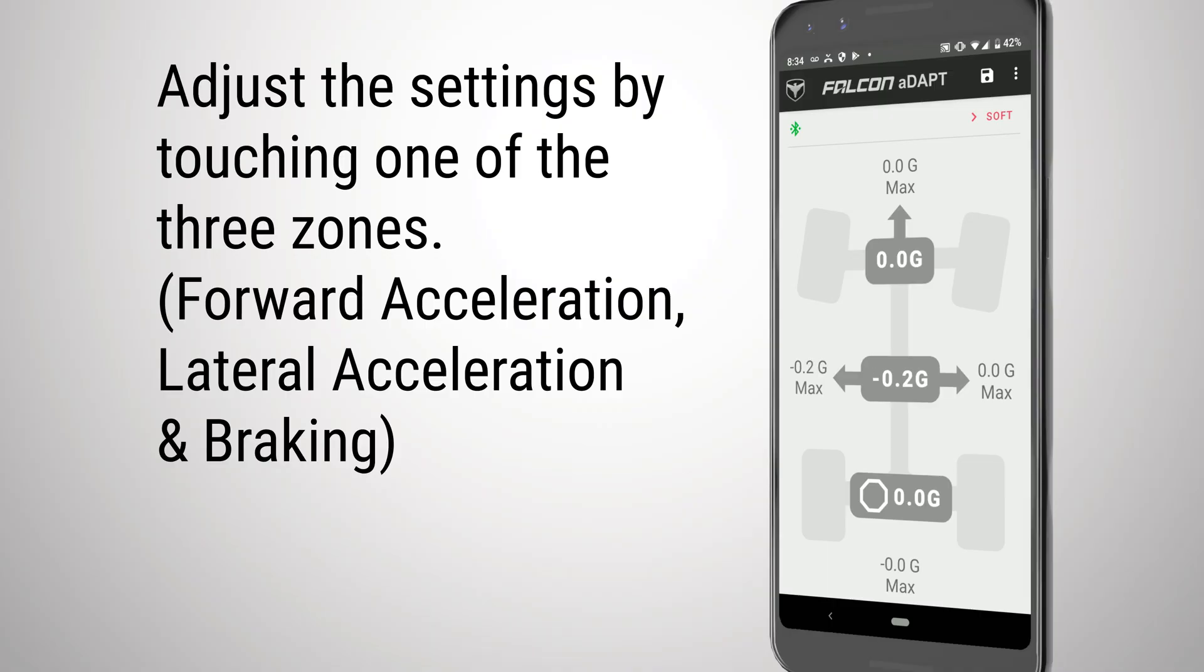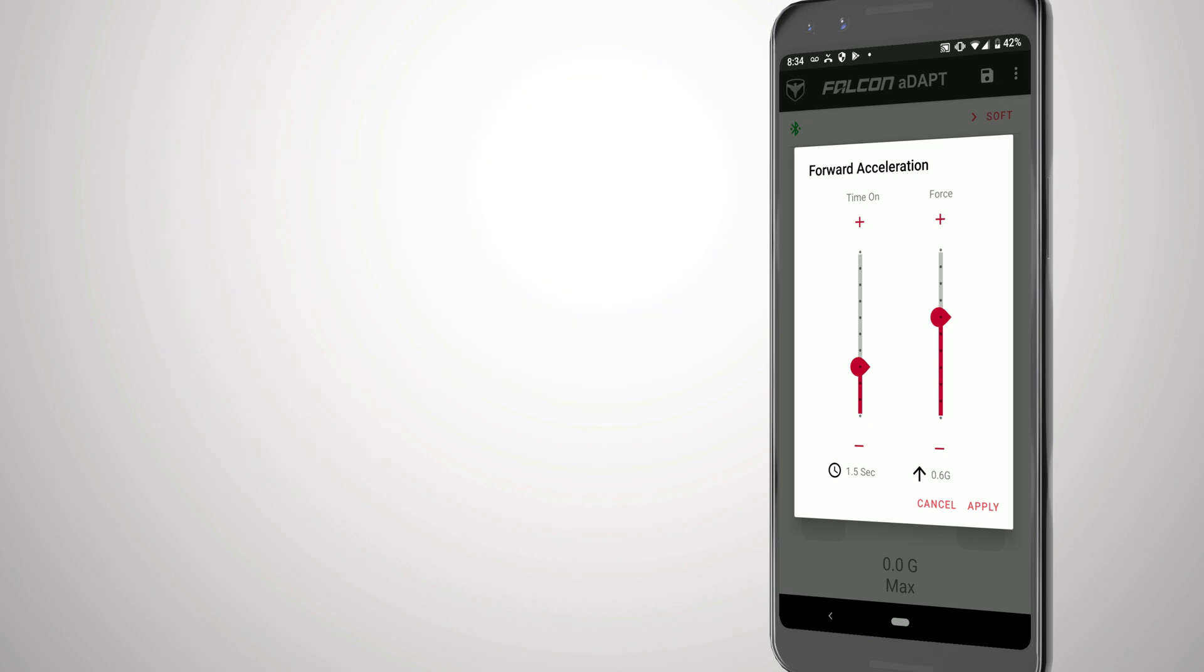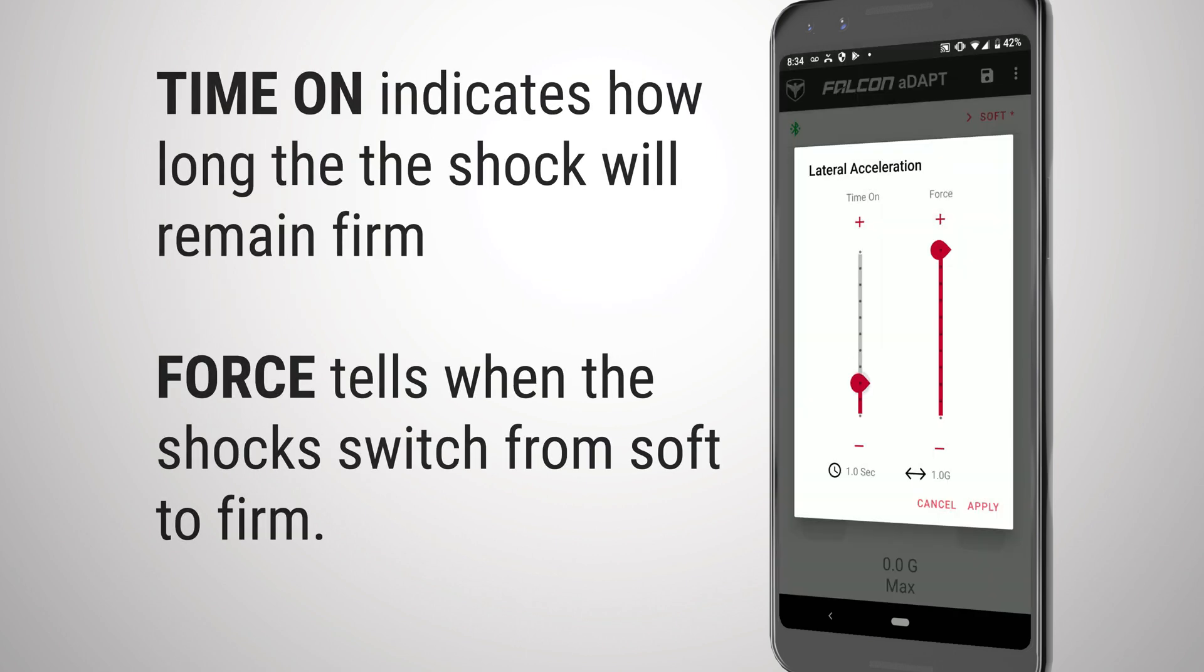Altering the settings is as easy as tapping on one of the three zones and adjusting the force and time on sliders. Time on indicates how long the shock will remain firm. Force tells the shock when to switch from soft to firm.